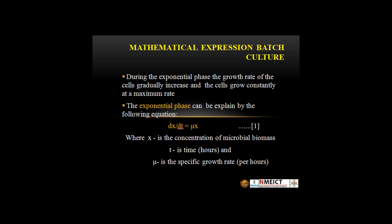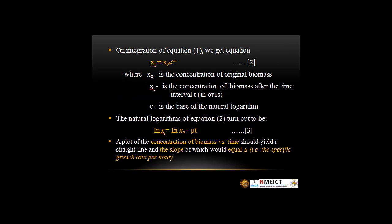Mathematical Expression of Batch Culture: During the exponential phase, the growth rate of cells gradually increases and the cells grow constantly at a maximum rate. The exponential phase can be explained by the following equation. On integration of equation 1, we get another equation. These equations are generally expressed in the natural log, and after converting, the derived equation is obtained. A plot of the concentration of biomass versus time should yield a straight line, the slope of which would equal mu.